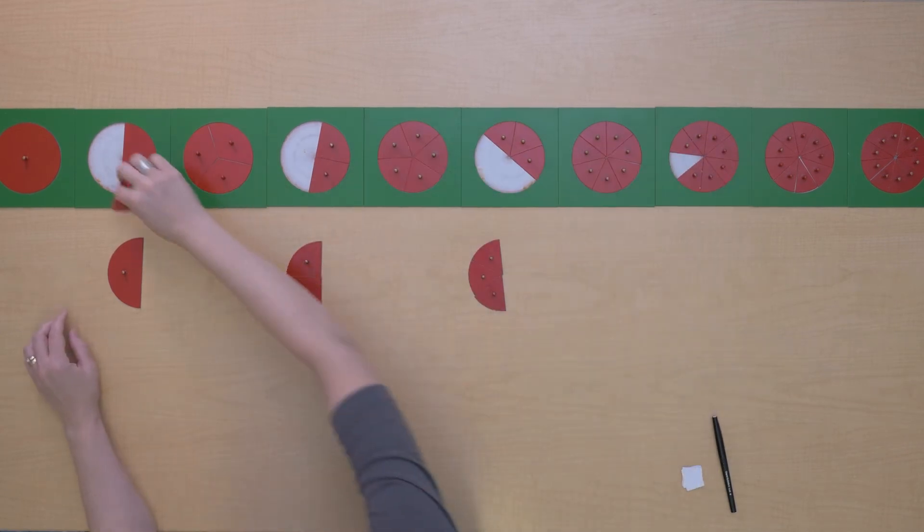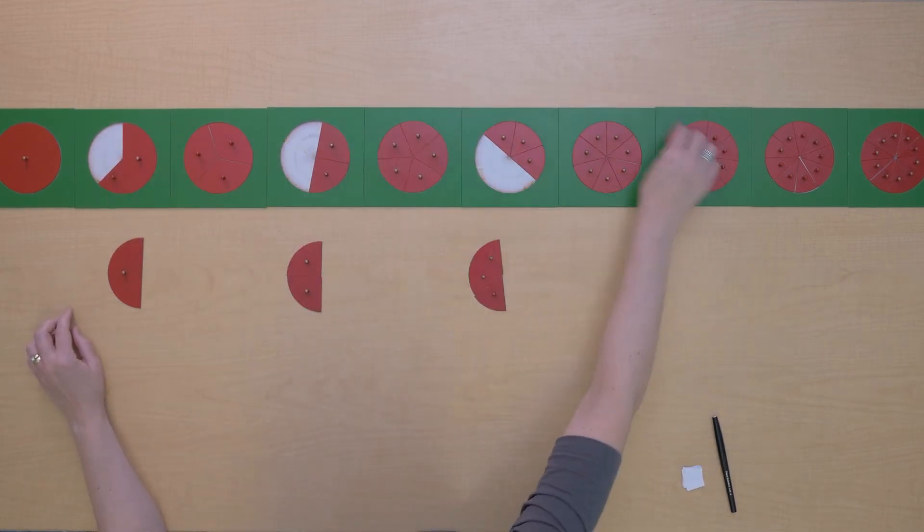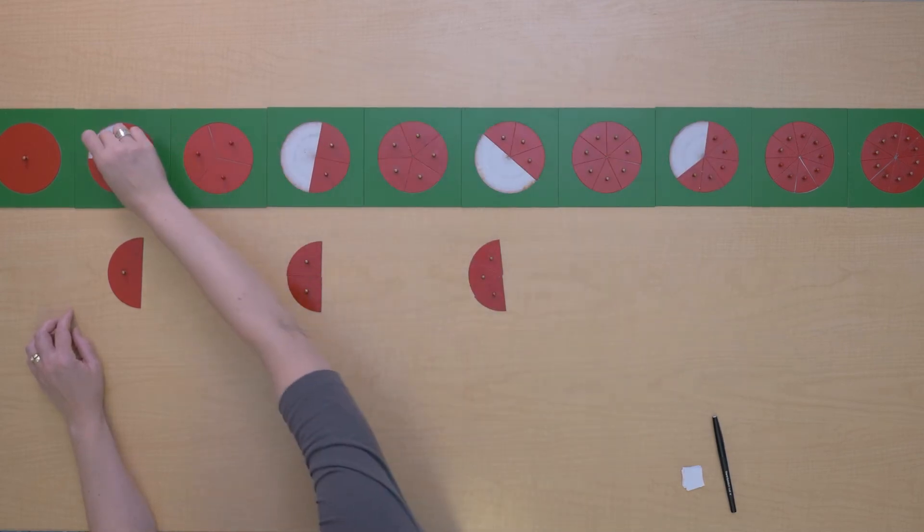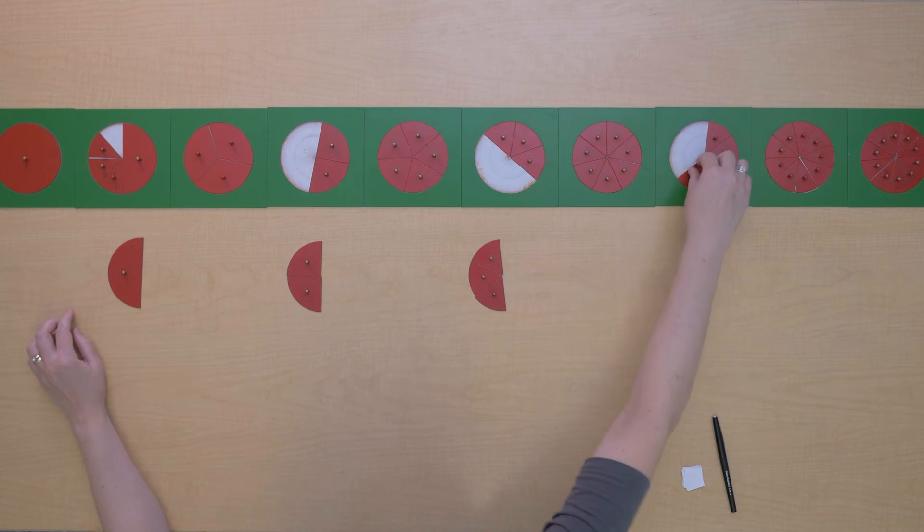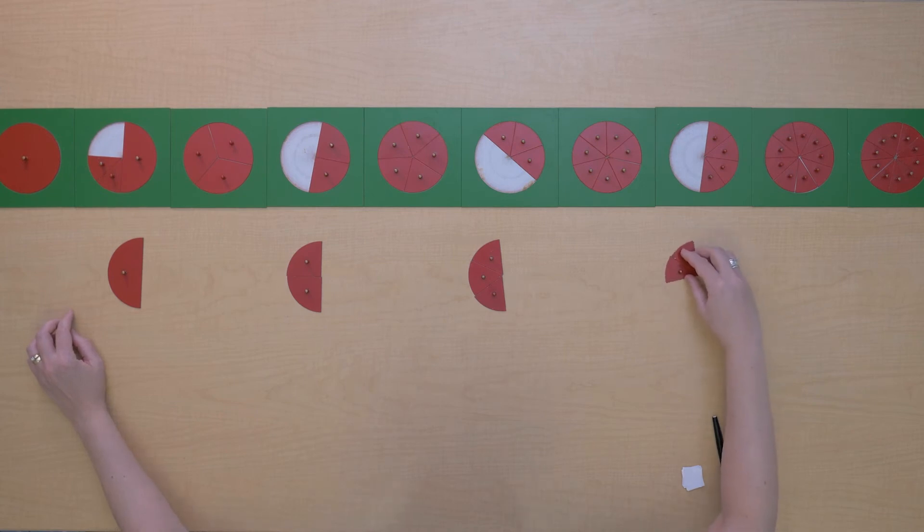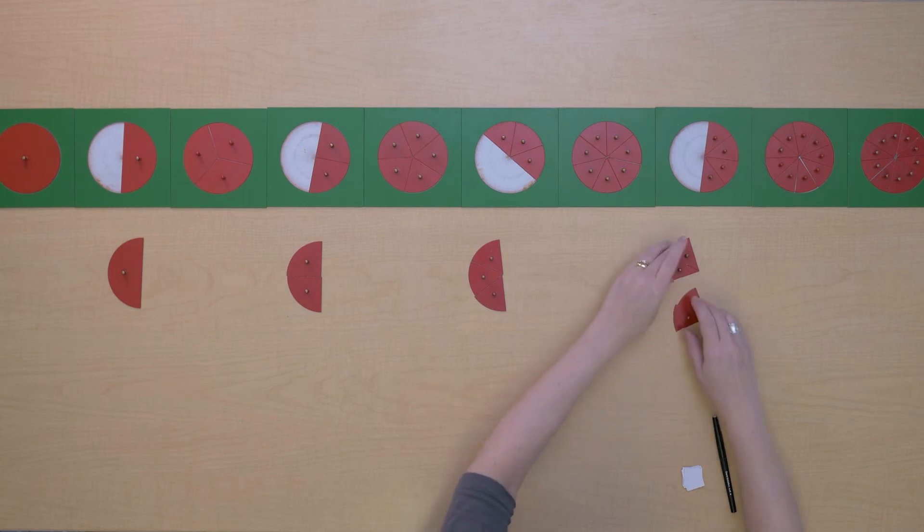Let's try eighths. Aha, so four eighths takes up the same amount of space as one half.